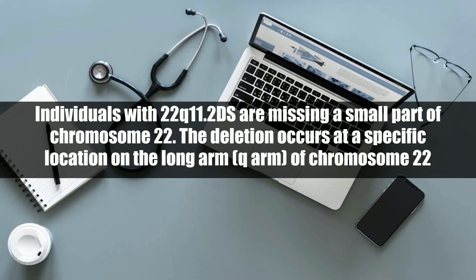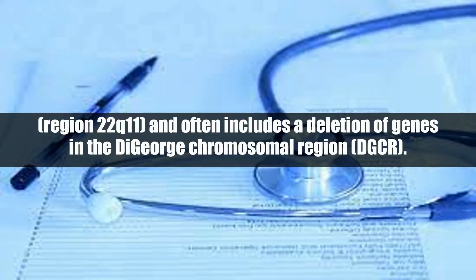Individuals with 22Q11.2DS are missing a small part of chromosome 22. The deletion occurs at a specific location on the long arm, or Q arm, of chromosome 22, region 22Q11, and often includes a deletion of genes in the DiGeorge chromosomal region (DGCR).